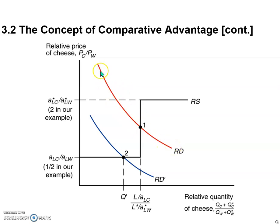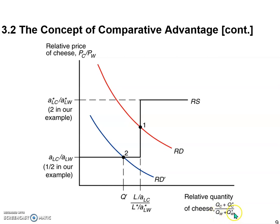The demand curve is still downward sloping. The vertical axis is the relative price of cheese — in other words, PC over PW. The quantity on the horizontal axis is also relative quantity of cheese: that's the total amount of cheese produced in home plus foreign, divided by the total amount of wine produced in home plus foreign. So as we said before, we only need one graph to show both economies — everything is expressed in a relative sense.